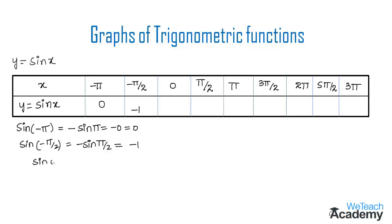For x = 0: sin(0) = 0, so y = 0. For x = π/2: sin(π/2) = 1, so y = 1. For x = π: sin(π) = 0, so y = 0. For x = 3π/2: sin(3π/2) = -1, so y = -1.